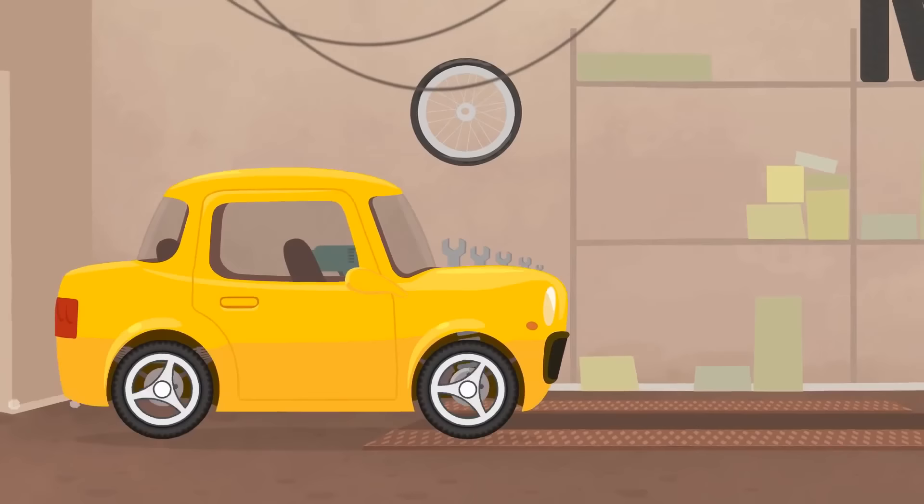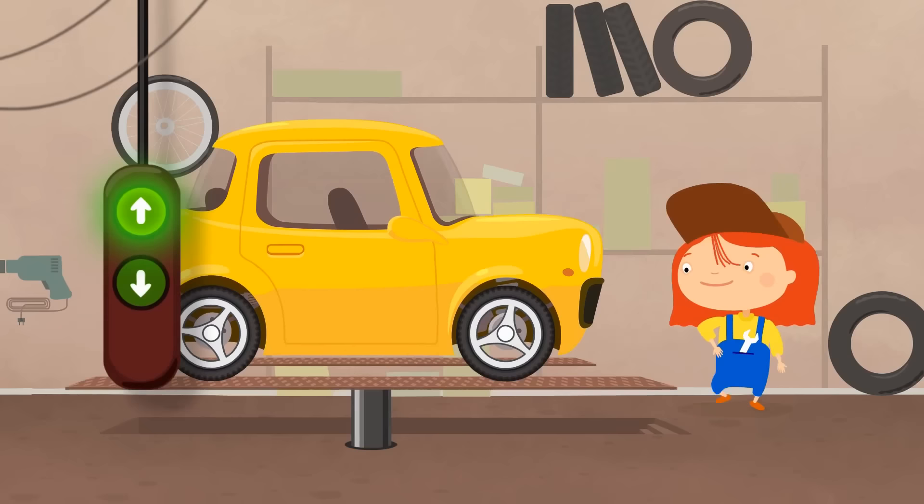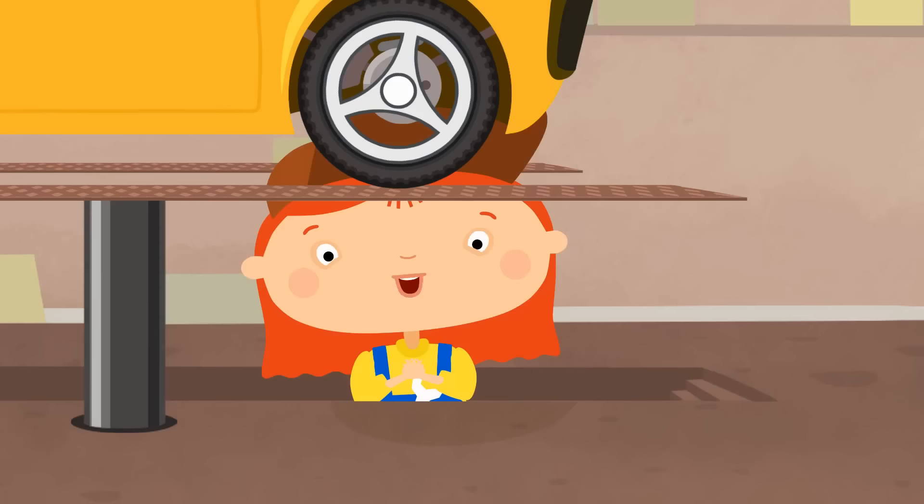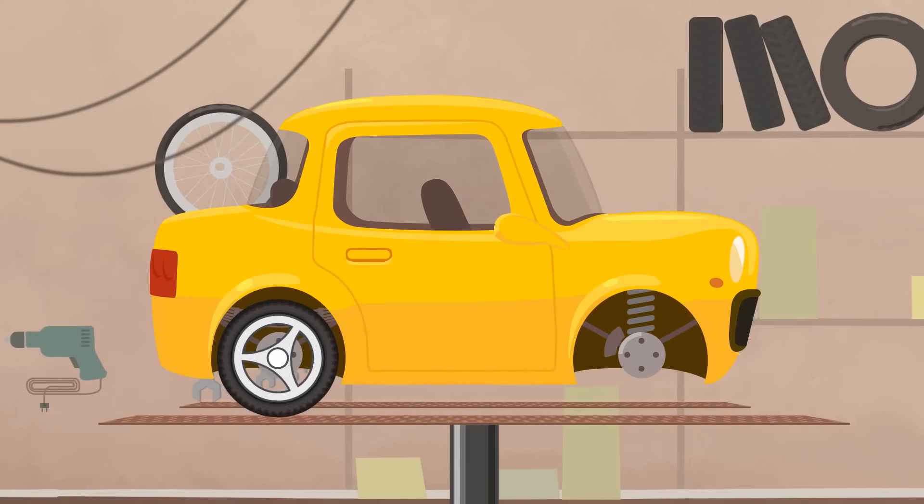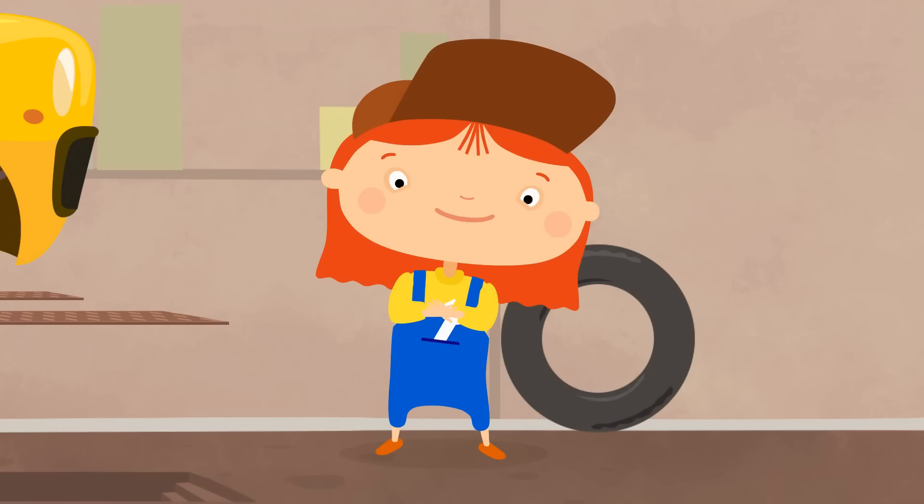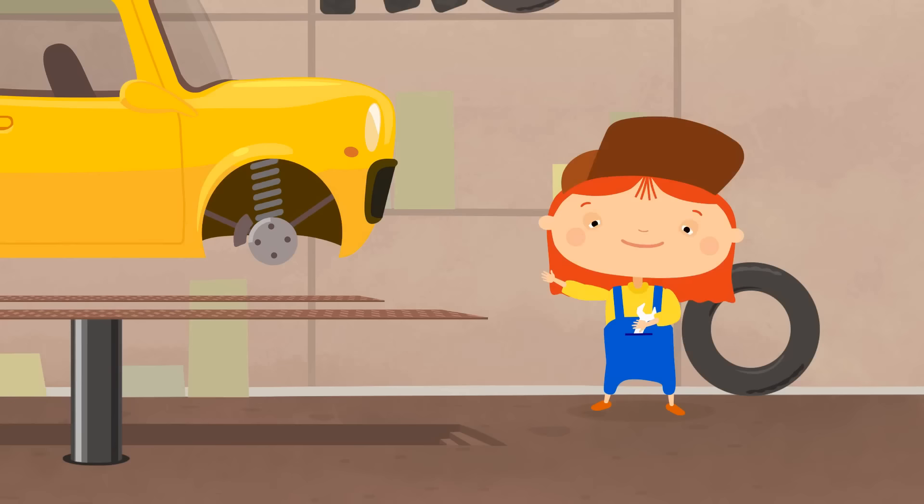And here is the garage. Dr. McWheely is already waiting. Little car, hold on tight. Dr. McWheely will raise the platform to examine you. I see, your ground clearance is too low. And you need to change the wheels too. Let's start with that. One, two. Now let's increase the ground clearance. Front and rear. Great.